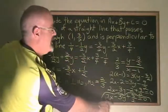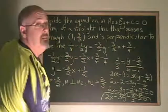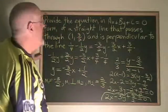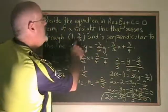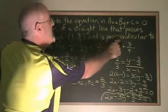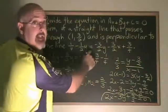This is the equation in standard form of the line that goes through the given point and is perpendicular to the given line.